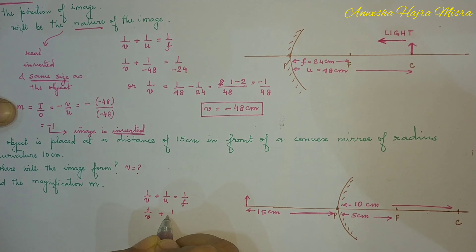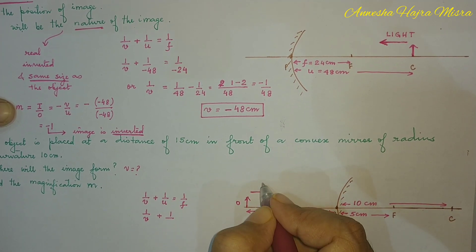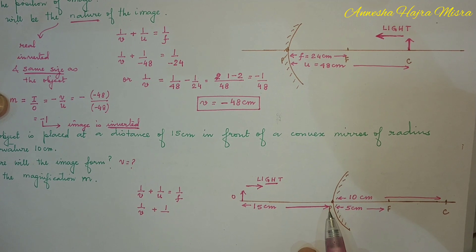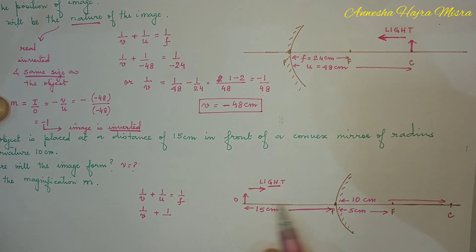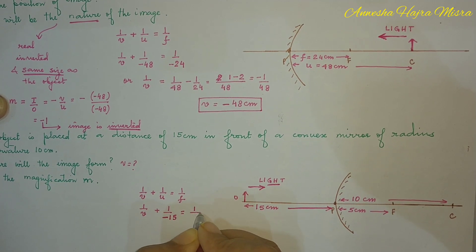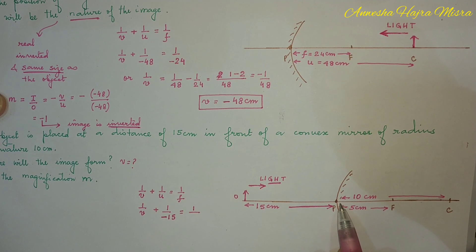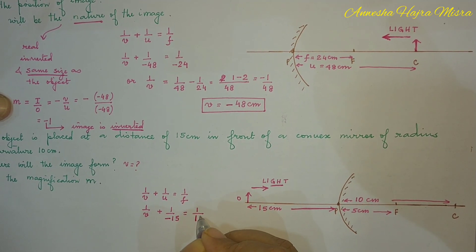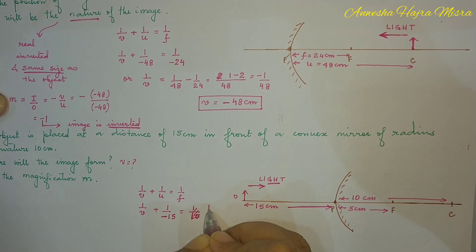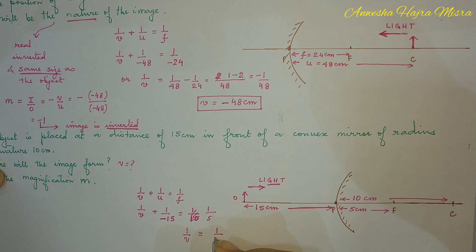Sign convention: all distances are measured from the pole. Light is coming in from the object. Going from pole to object, you are going against light, so U is minus 15. Going from pole to focus for a convex mirror, you are going in the direction of light, so focal length is plus 5.